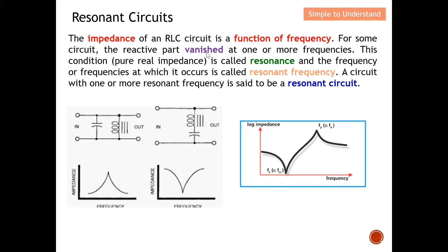For some circuits, the reactive part vanishes at one or more frequencies — meaning the L and C parts disappear at certain frequencies. This condition is called pure real impedance, meaning only R exists and all imaginary parts have disappeared. This is what we call resonance, and the frequency at which this occurs is called the resonant frequency. A circuit with one or more resonant frequencies is said to be a resonance circuit.